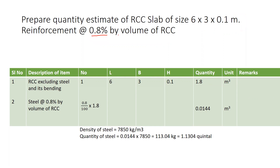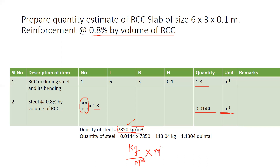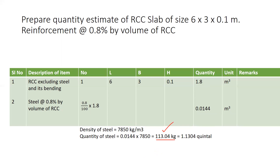The reinforcement is 0.8% by volume of RCC. The volume is 1.8 cubic meters. It is 0.8 divided by 100, which is 0.008. The reinforcement volume is 0.0144 cubic meters. Multiplying by the density of steel (kg per m³), we get approximately 133.04 kg.